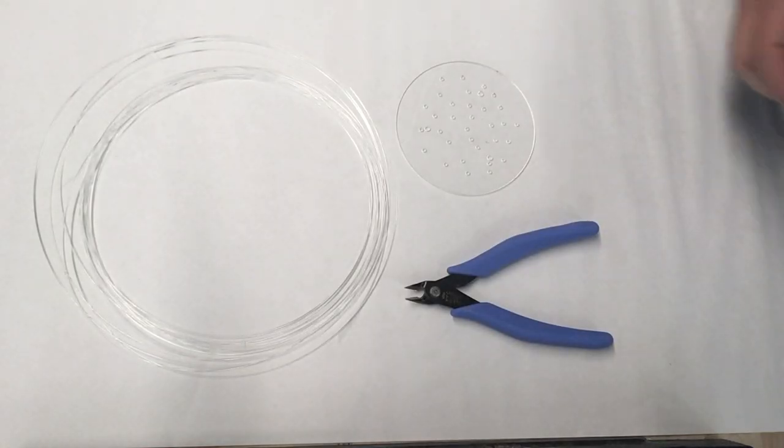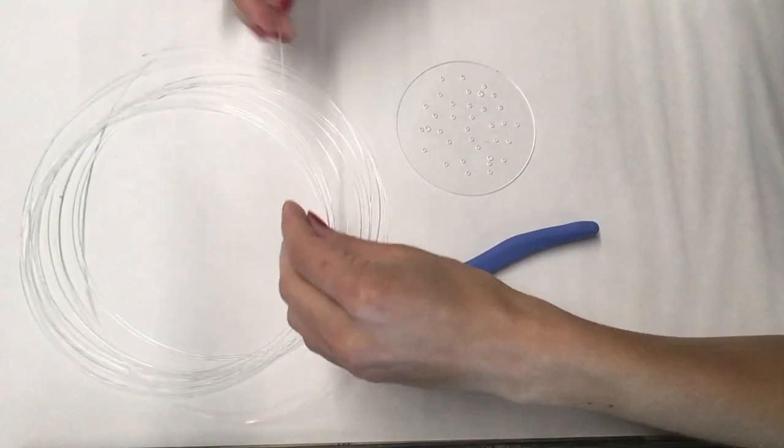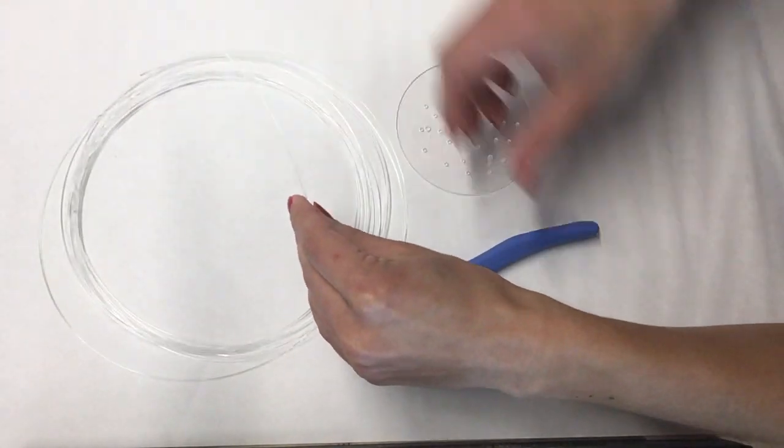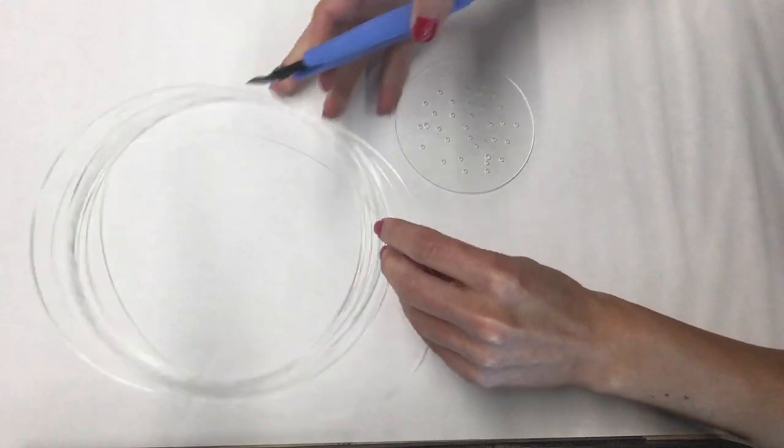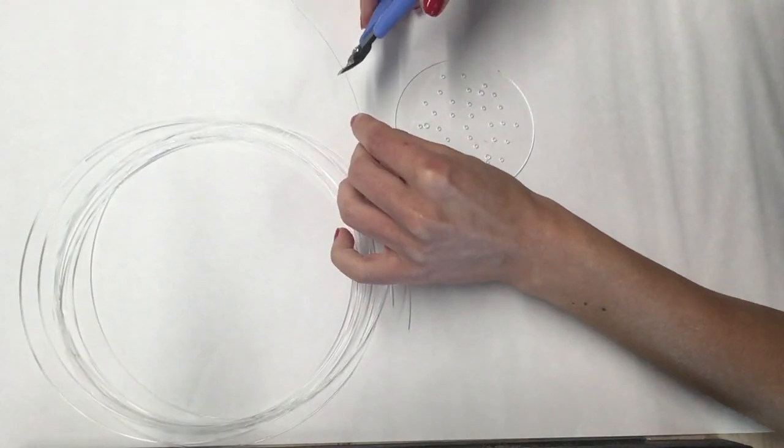For this video you will need to have glowing fibers, a cutting tool, glue, and the glowing fiber layer of YOLO already 3D printed or laser cut.